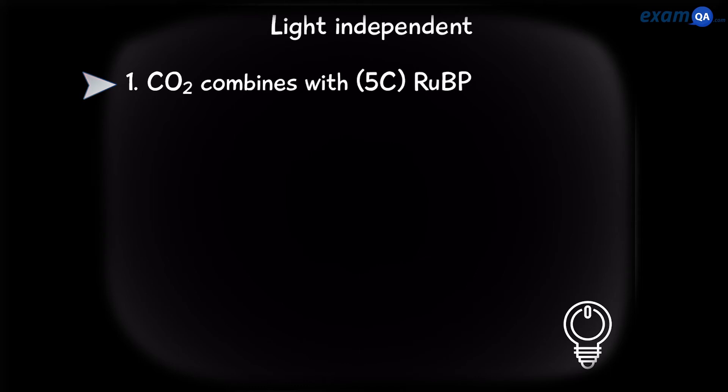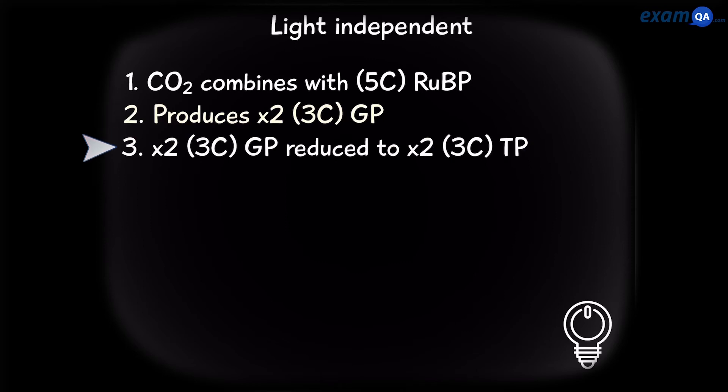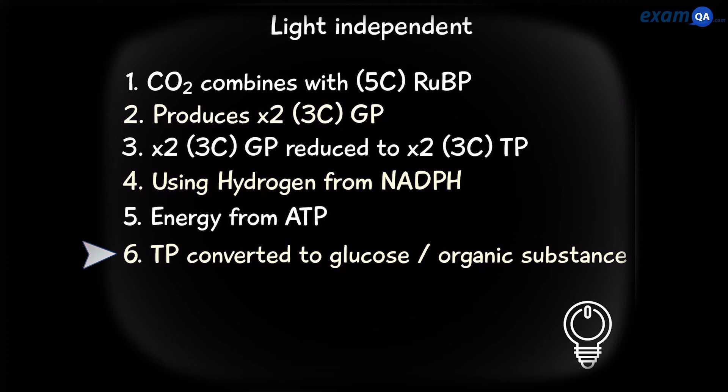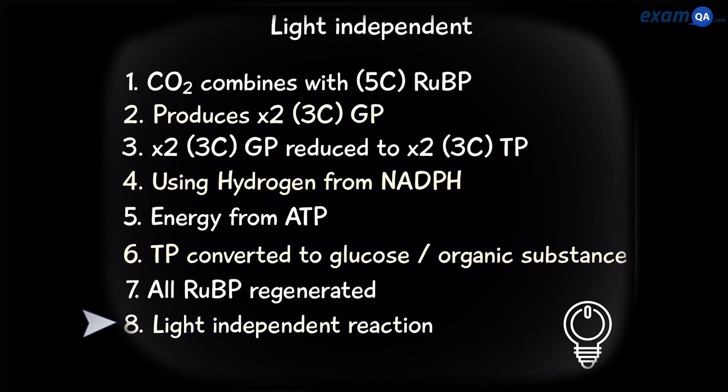Step one: Carbon dioxide combines with the 5 carbon compound RuBP. This produces 2 lots of 3 carbon compound GP. The 2 GPs get reduced into 2 TPs using hydrogen from NADPH and energy from ATP. The TPs are converted into glucose or any named organic substance in the question. For example, pentose. So that means you have to make sure you read the question properly. All the RuBP is regenerated. And make sure you include the word light independent reaction.